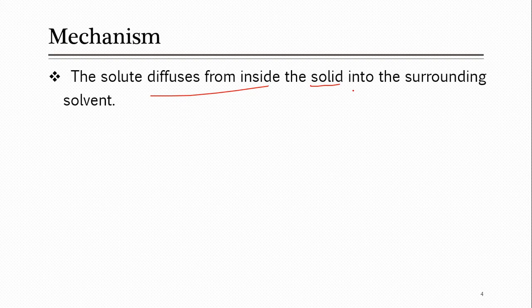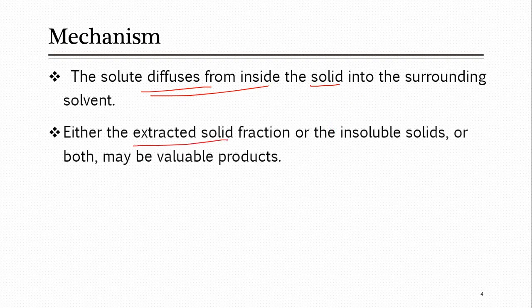For example, when tea leaves are added to liquid water, some chemicals are extracted from those tea leaves and enter into the liquid solvent. That is how it occurs — diffusion of solute from inside the solid to the surrounding solvent. The extracted solid fraction — what remains — is insoluble. Either the extracted soluble fraction, the insoluble solid, or both may be valuable products, depending on the application.